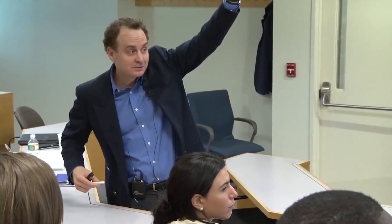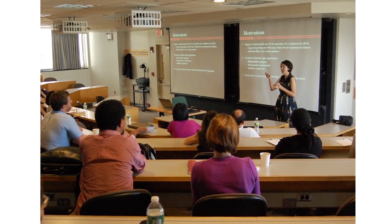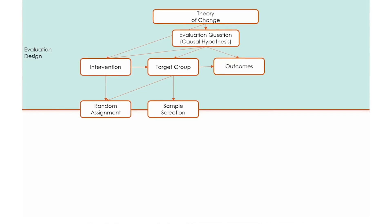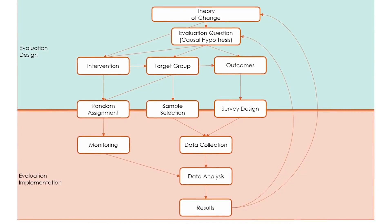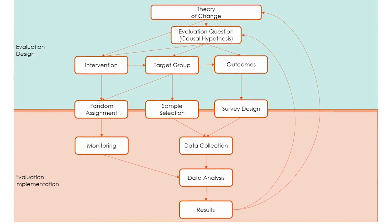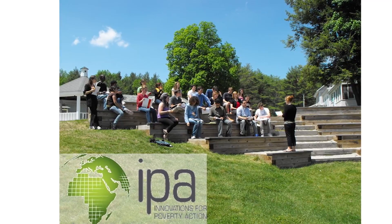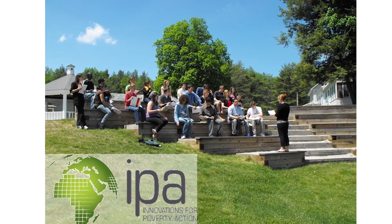Beyond running randomized evaluations, we also have a team at J-PAL that trains others on how to do so. Since 2005, we've been training others all over the globe on how to design their own randomized evaluations. However, designing randomized evaluations is only half of the challenge. The other half — the expensive half, the time-consuming half, and probably the most difficult half — is running randomized evaluations in the field. That's why since 2008, along with IPA, we've been formally training our staff on how to implement field trials.